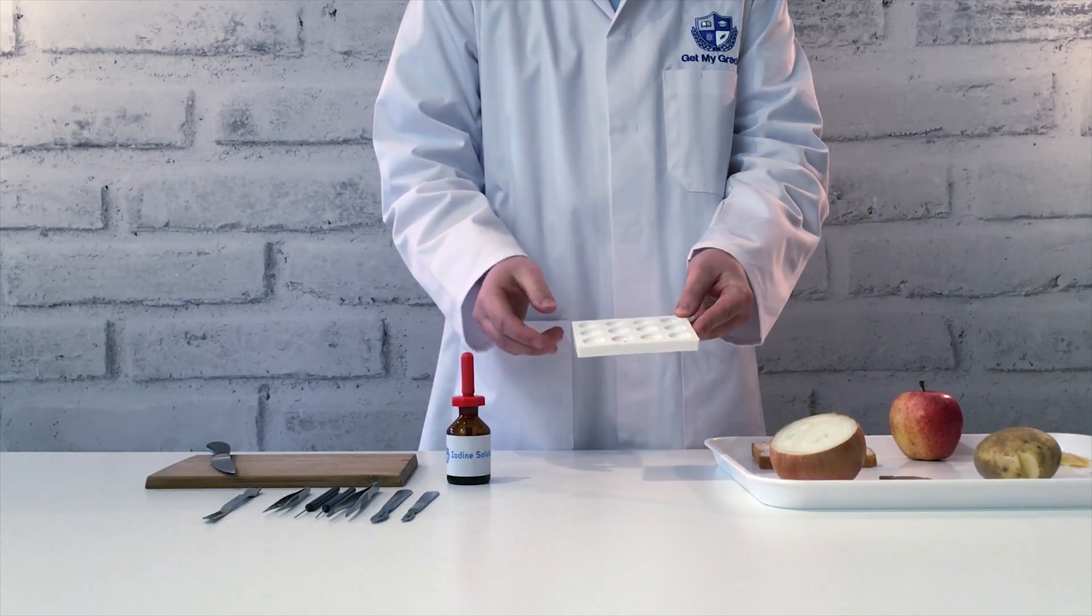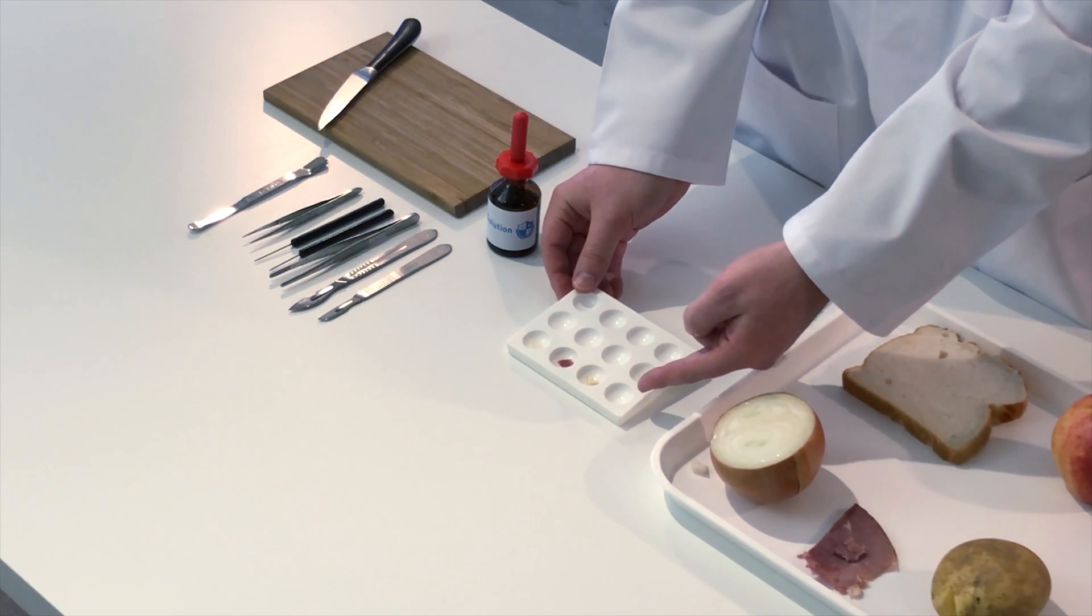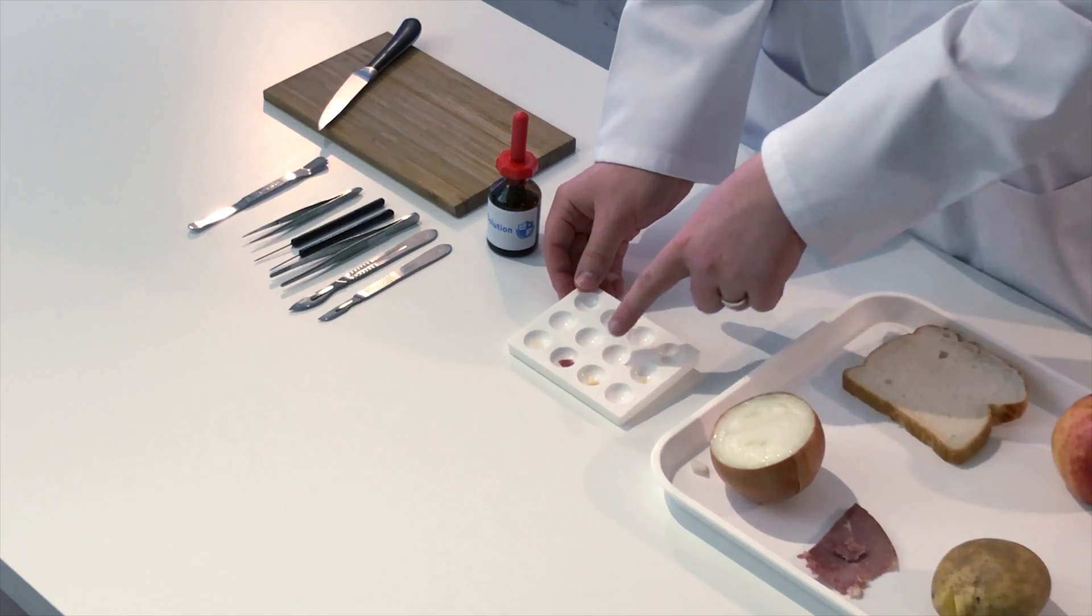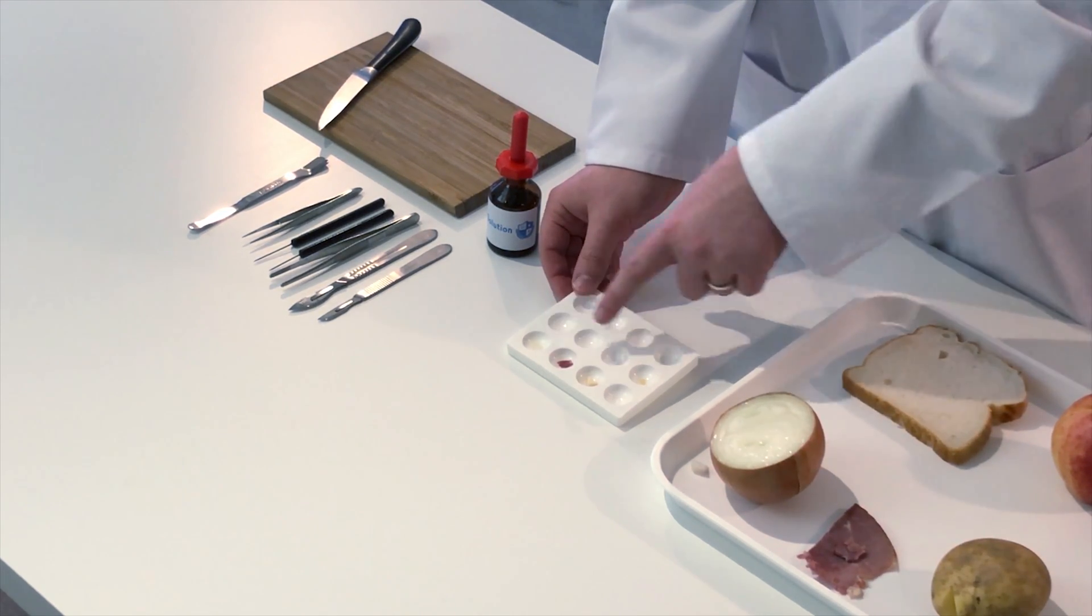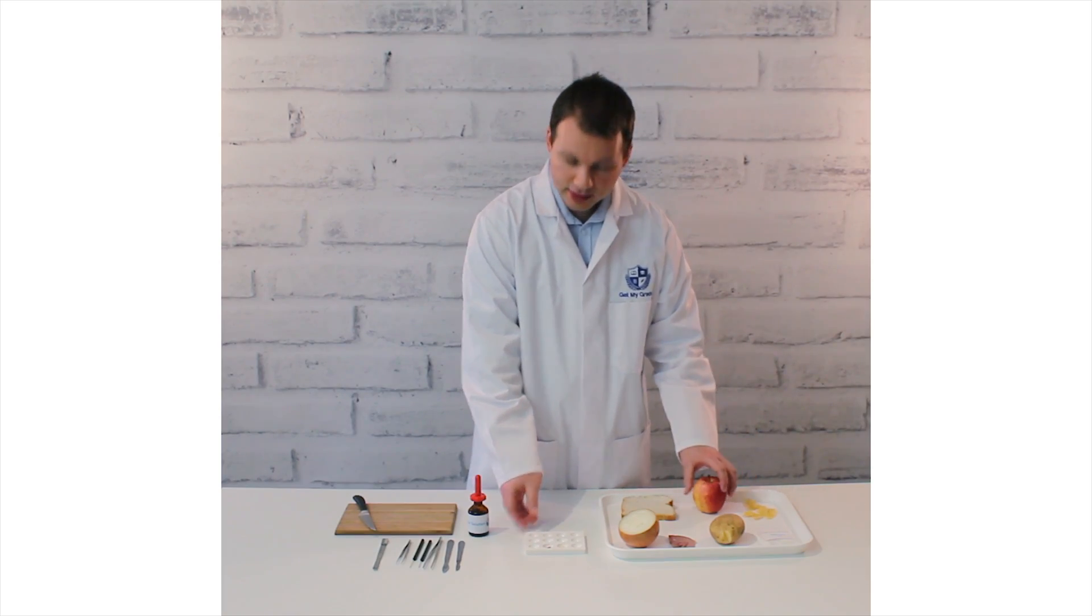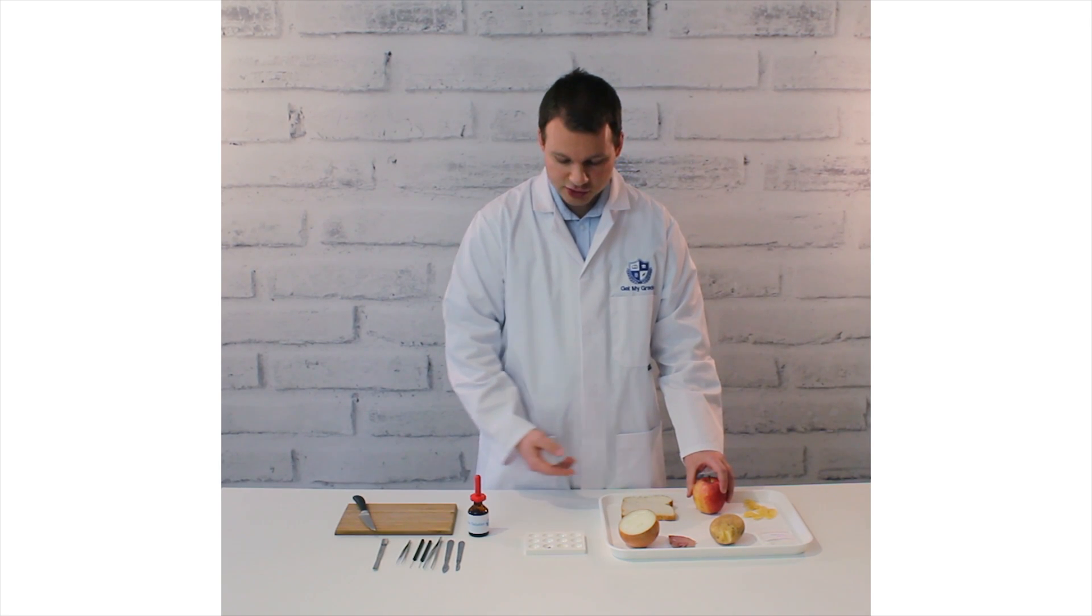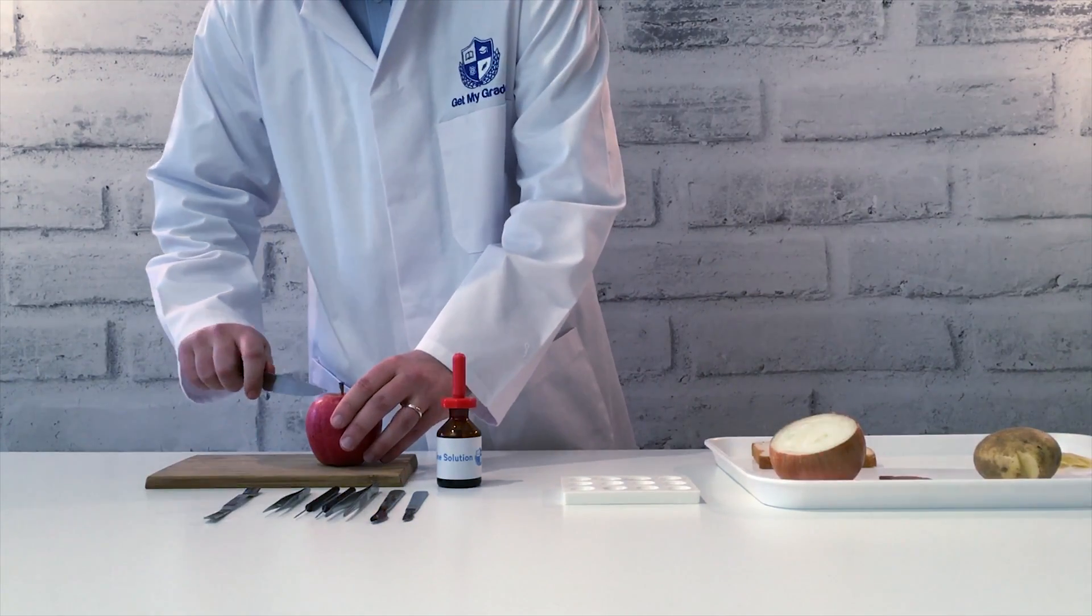I've already put some food samples in the spotting tile already. We've got a small sample of soluble starch, a small sample of potato, a little piece of ham, onion, a bit of pasta. And then I'm going to add some apple and we're going to use some bread as well. I'm going to test all of them for starch. So let's get going.